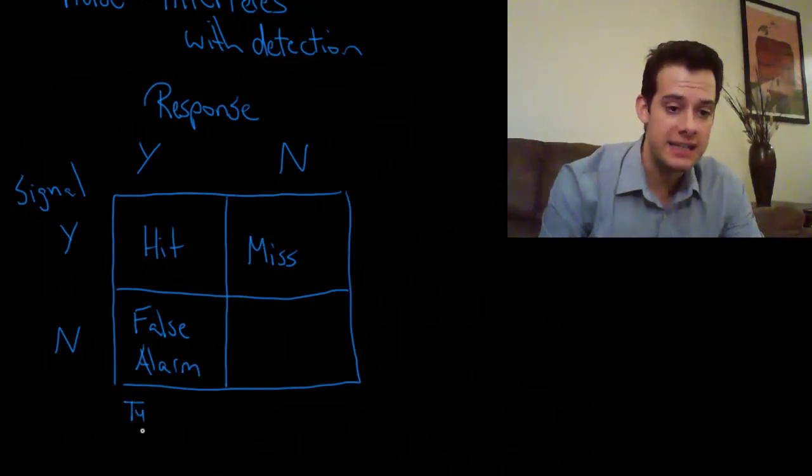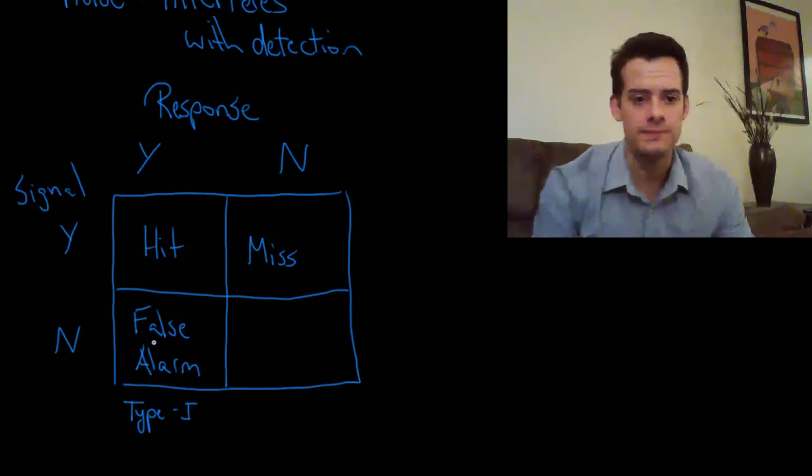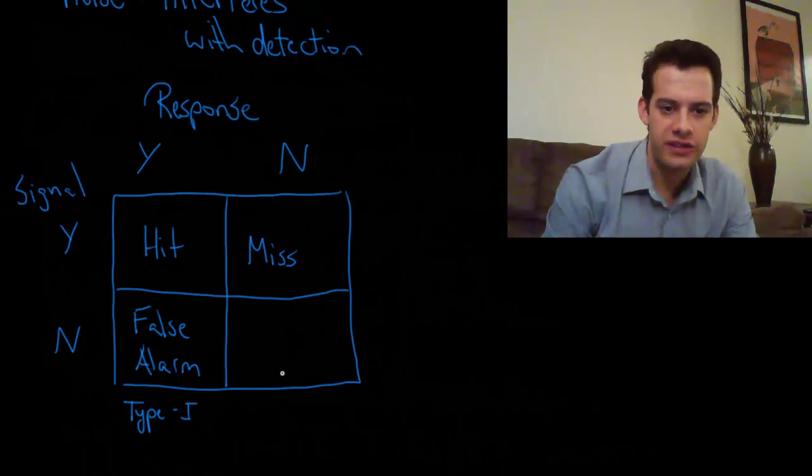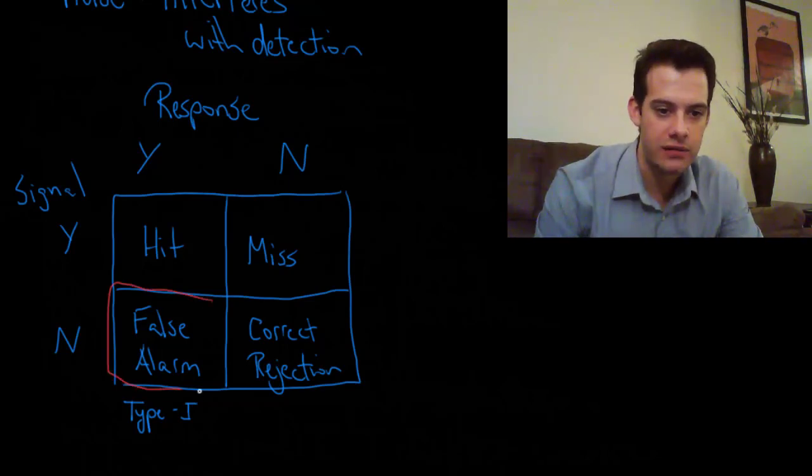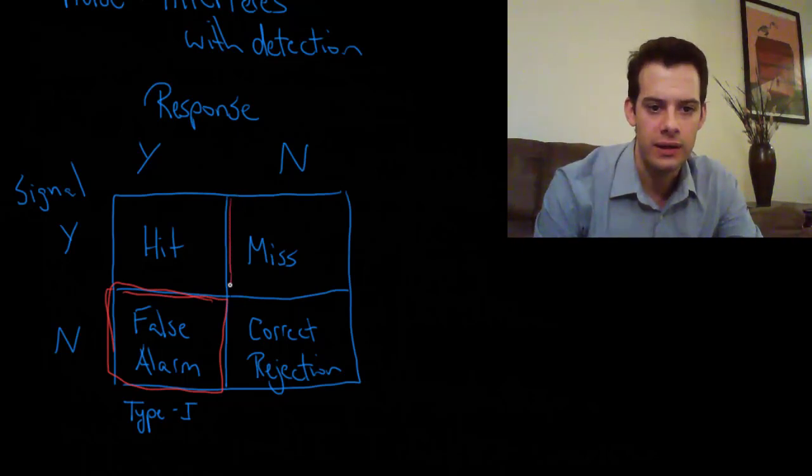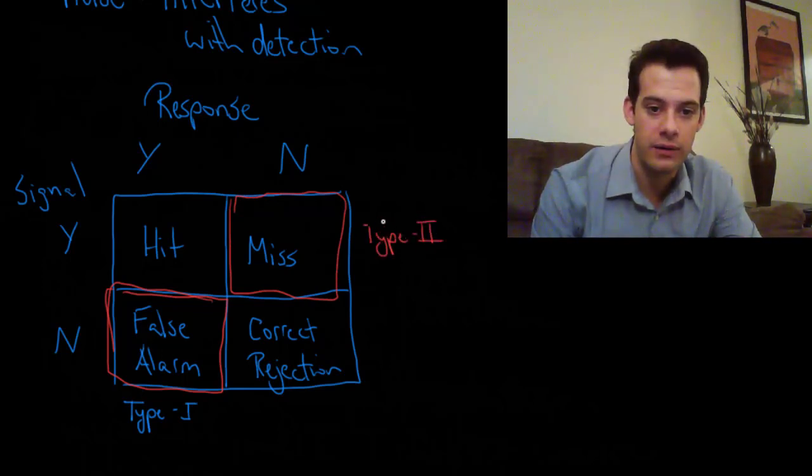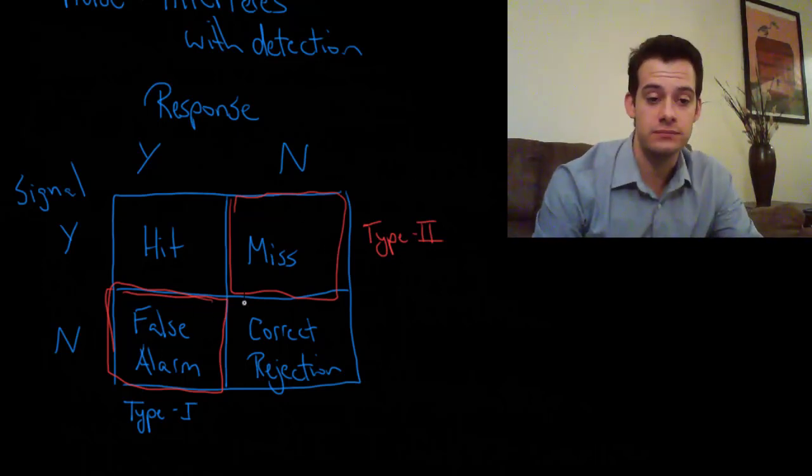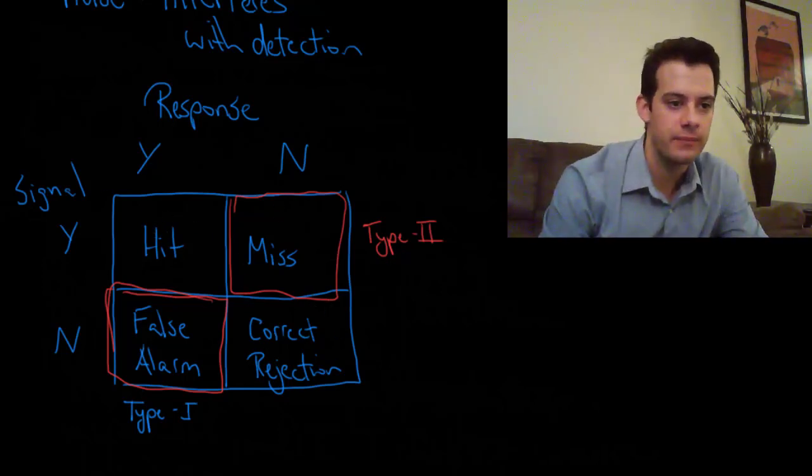Or if you take a statistics course you may see this type of error called a type 1 error. This idea that there is not a signal and you think that there is. That's a type 1 error. Now there's also the possibility that there's no signal and you don't say that you hear it. So I don't play a sound and you say I didn't hear anything. And that would be a correct rejection. So we have sort of these two possible errors here. The false alarm, which I mentioned is sometimes called a type 1 error. And then the miss here where there is a signal but you don't detect it. And this is sometimes you'll see this referred to as a type 2 error. And then you have these two correct outcomes where you have a hit where there is a signal and you detect it or a correct rejection where there is no signal and you don't think that there's a signal.